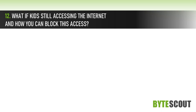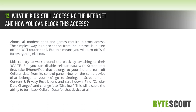What if kids are still accessing the internet and how can you block this access? Almost all modern apps and games require internet access. The simplest way to disconnect from the internet is to turn off the Wi-Fi router entirely, but this means you will turn off Wi-Fi for everything else too.